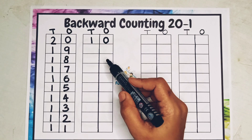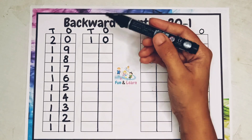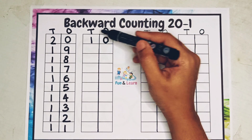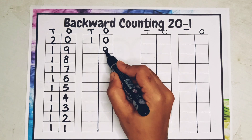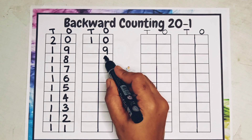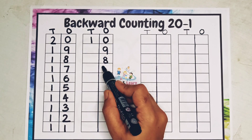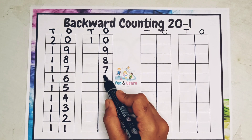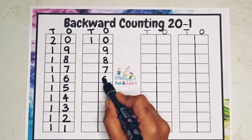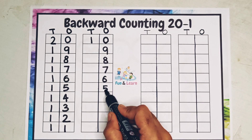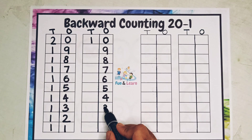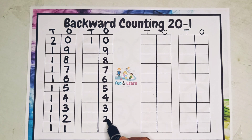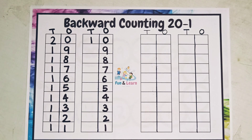When you come to 10, after 10 when you write 9, there is no number in the tens place. 9, 8, 7, 6, 5, 4, 3, 2, and 1.